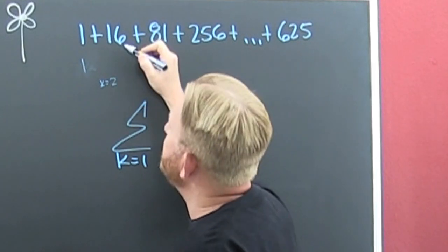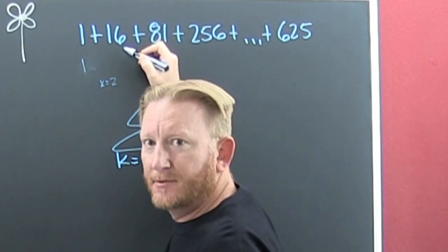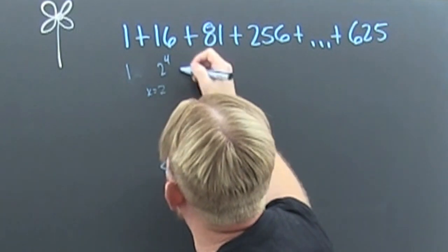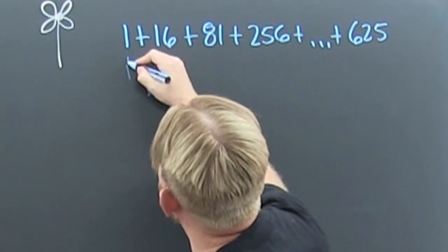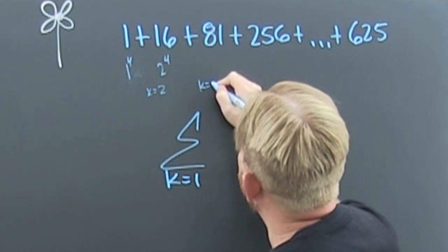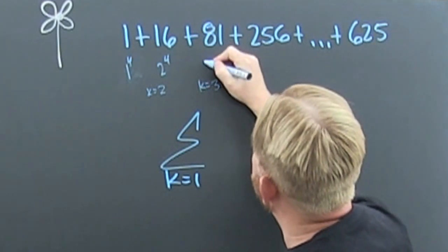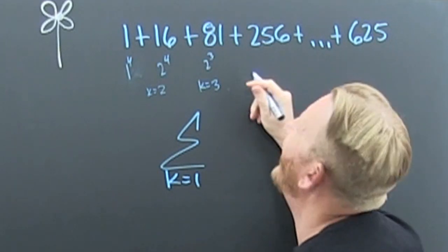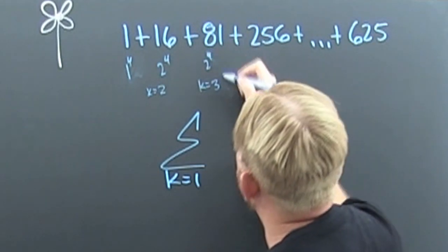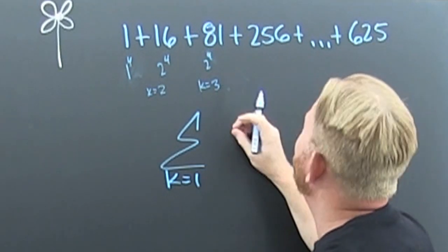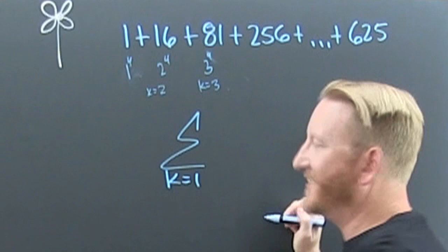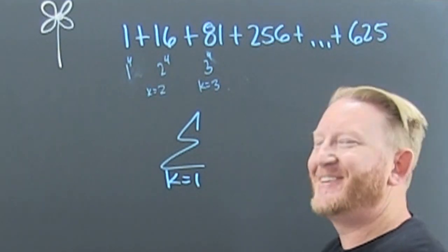How do you make 2 a 16? To the 4th power. So then that's 2 to the 4. So 1 to the 4. Now if K is equal to 3, then we see that's going to be... that's 3 to the 4.